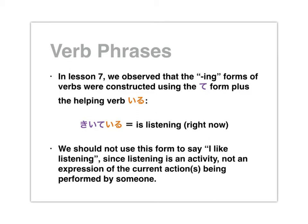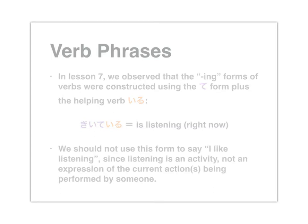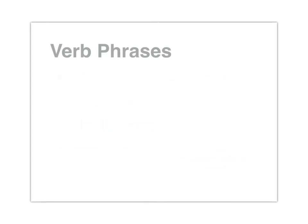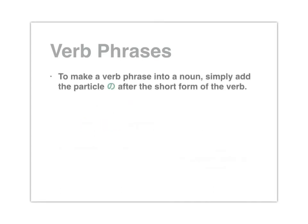So it would be incorrect to use the te-iru form when you want to say 'I like listening to music.' What should we say instead? The way we'll go about this in Japanese — to make a verb phrase into a noun — we'll simply add the particle no after the short form of the verb.